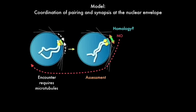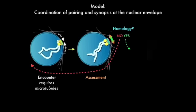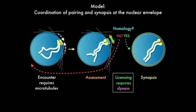However, if chromosomes are appropriately paired, then dynein doesn't separate them. Instead, it licenses them to go on and undergo synaptonemal complex polymerization. So we're basically proposing the existence of a licensing step that requires the activity of dynein and is required for formation of the synaptonemal complex.